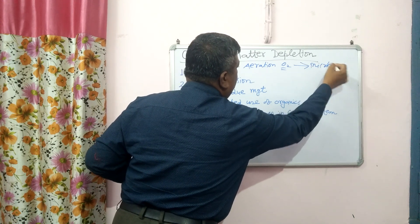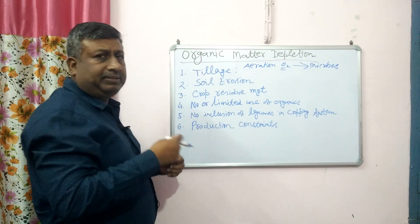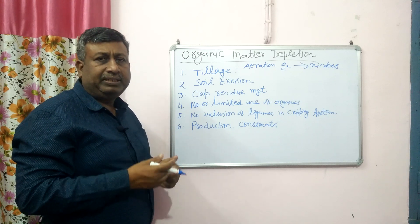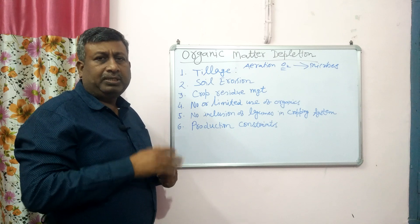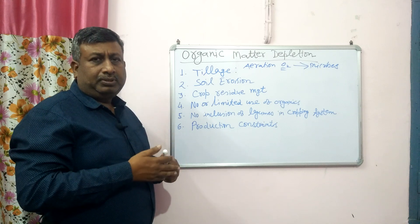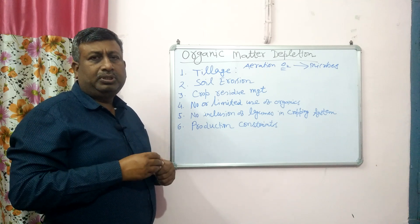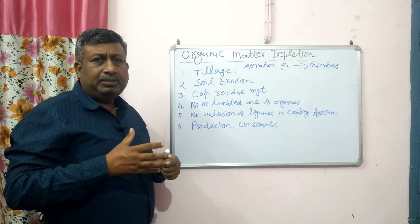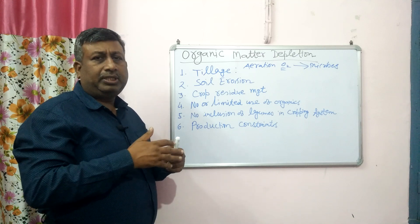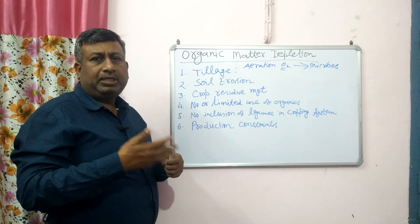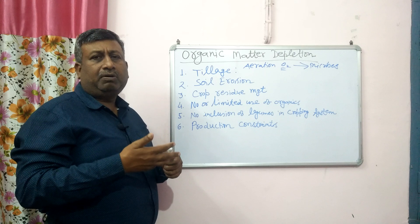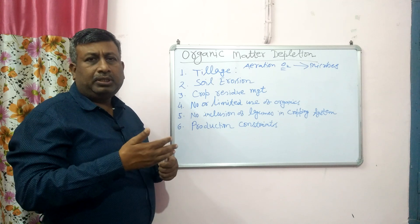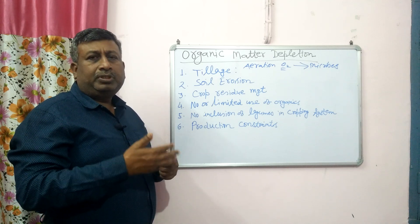Microbes require oxygen. So as there is tillage and harrowing, oxygen supply is increased. Organic matter is used as food for the microbes, so that is why tillage causes reduction in organic matter. It does not mean that we should not go for tillage at all — minimum tillage is a very good concept which maintains the nutrient supply as well as maintains the seedbed preparation and organic matter content.